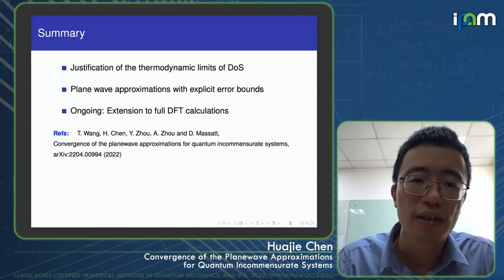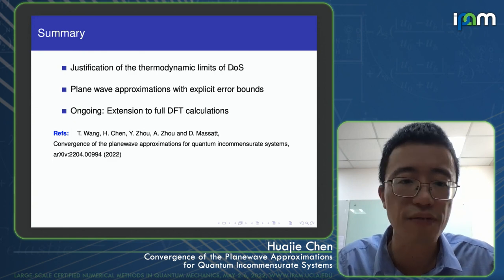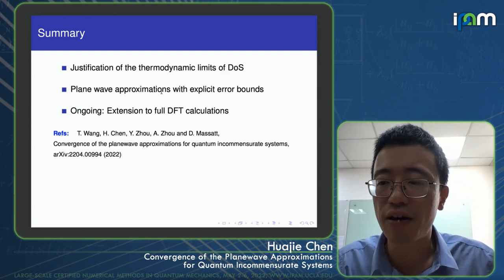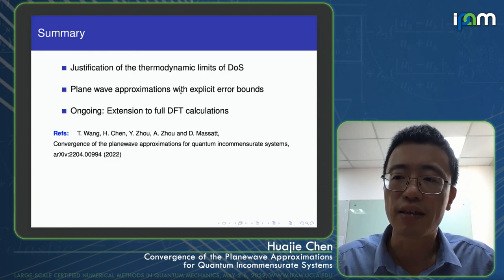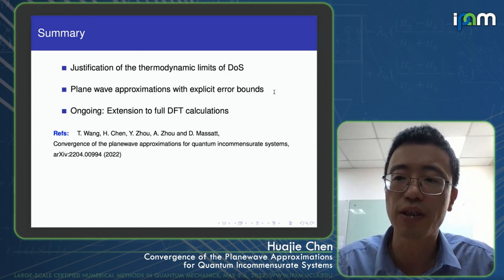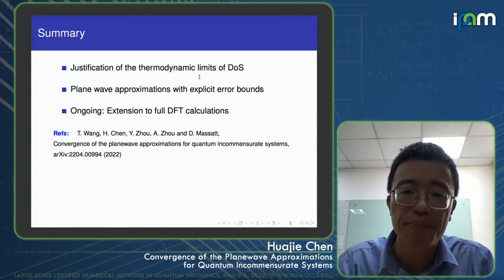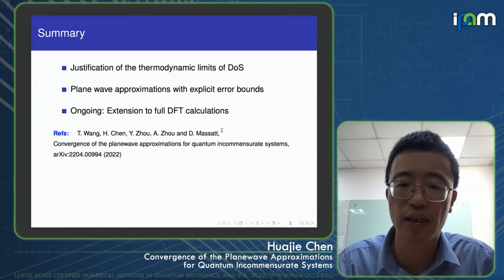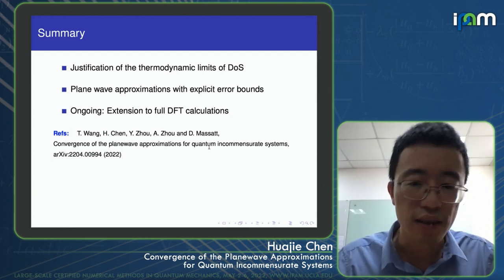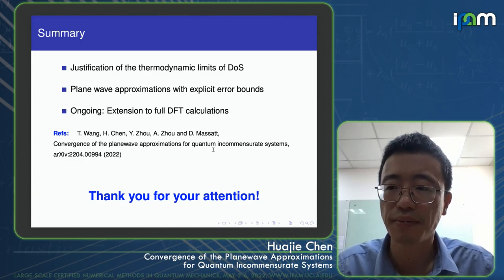In summary, we justify the thermodynamic limit of the density of states for incommensurate systems in a real-space formulation. We design plane wave approximations with a clever rectangular truncation in different directions and derive explicit error bounds with respect to the numerical parameters. We are currently extending this work to full DFT calculations, which involves nonlinear eigenvalue problems and presents significant additional analytical challenges.